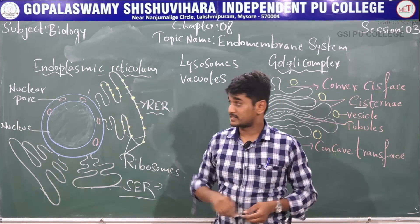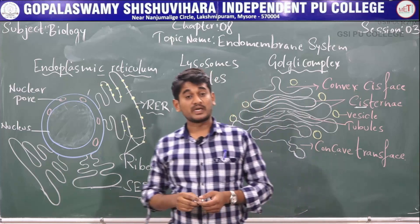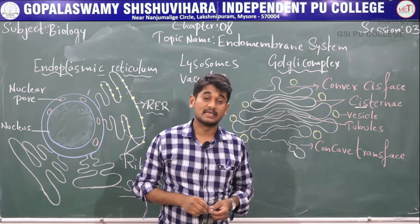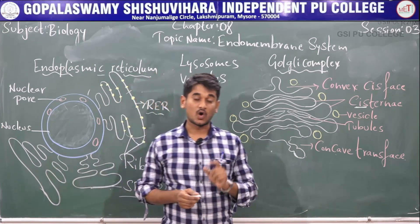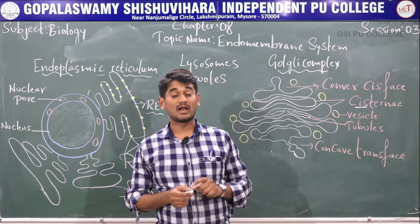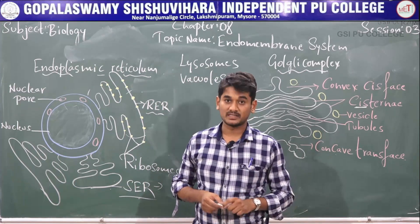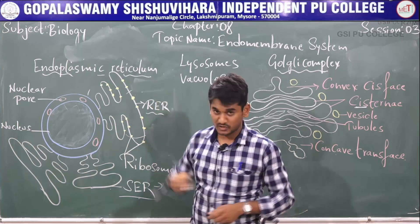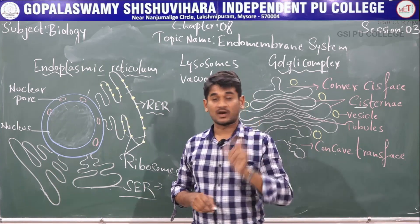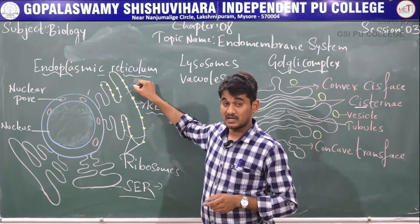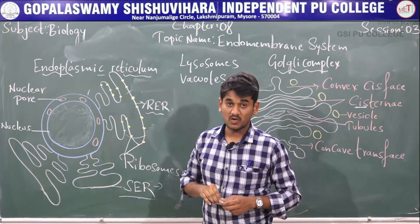Let us discuss the first one: the endoplasmic reticulum. Electron microscopic studies on eukaryotic cells reveal the presence of a network or reticulum of tiny tubular-like structures scattered in the cytoplasm. This is called the endoplasmic reticulum.